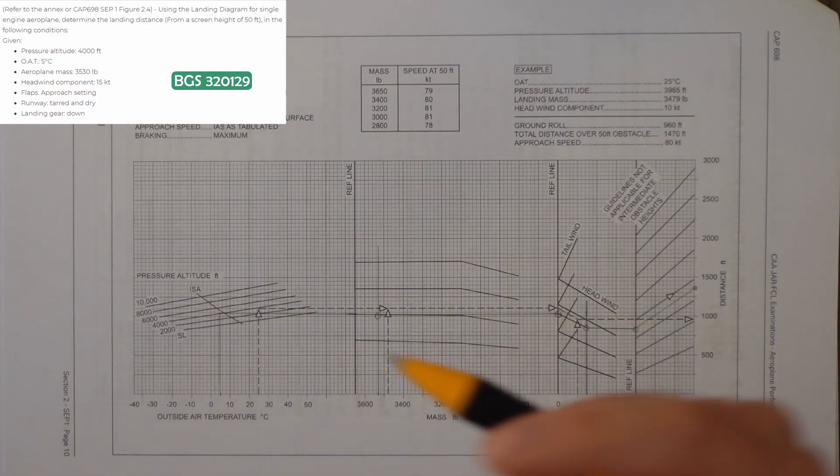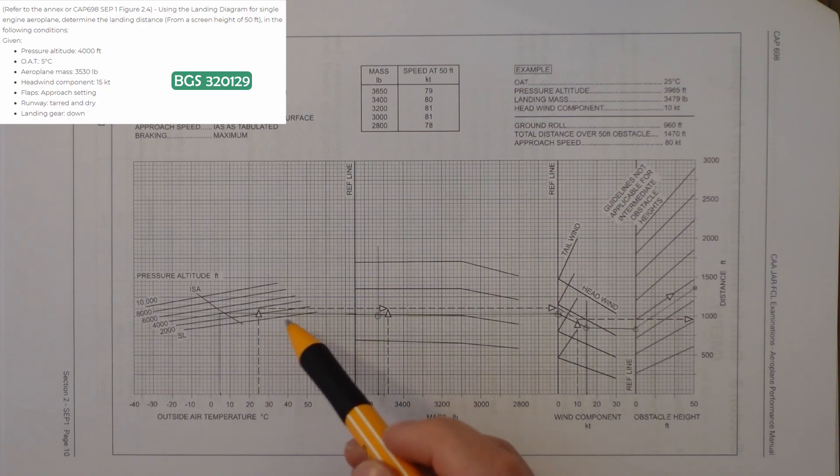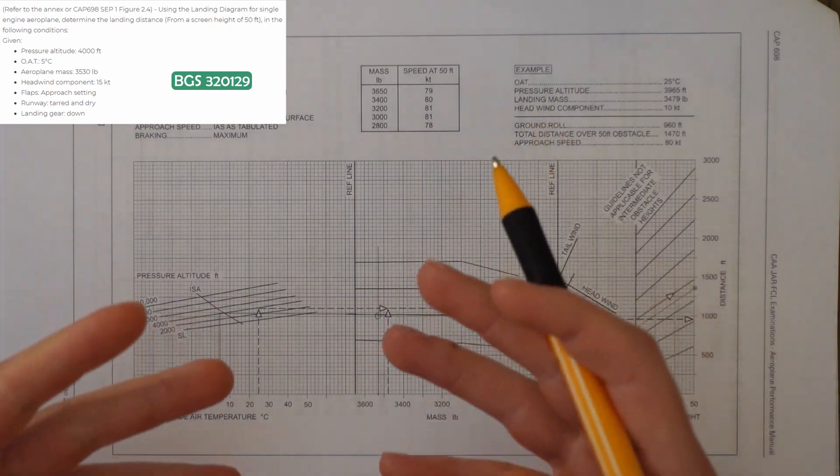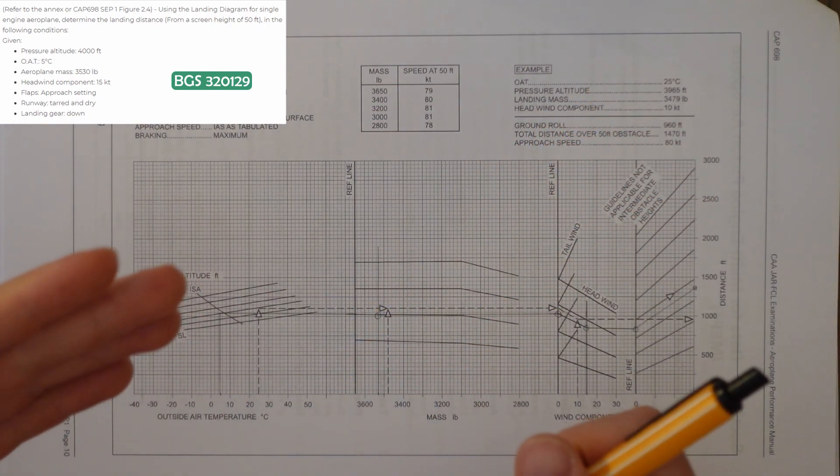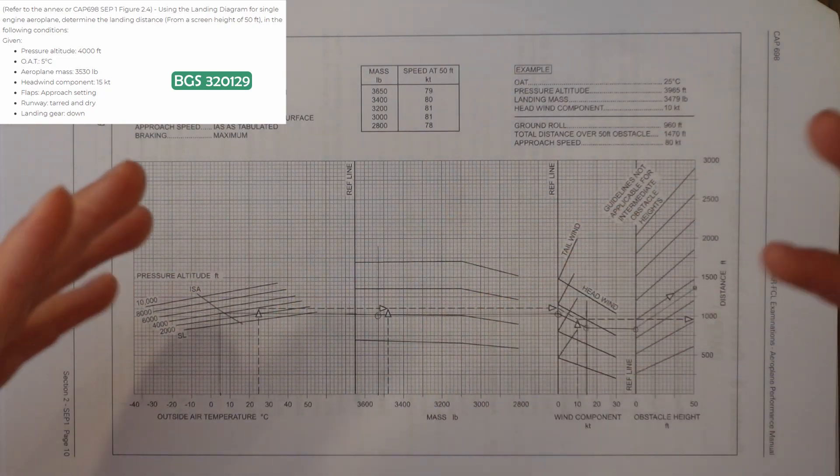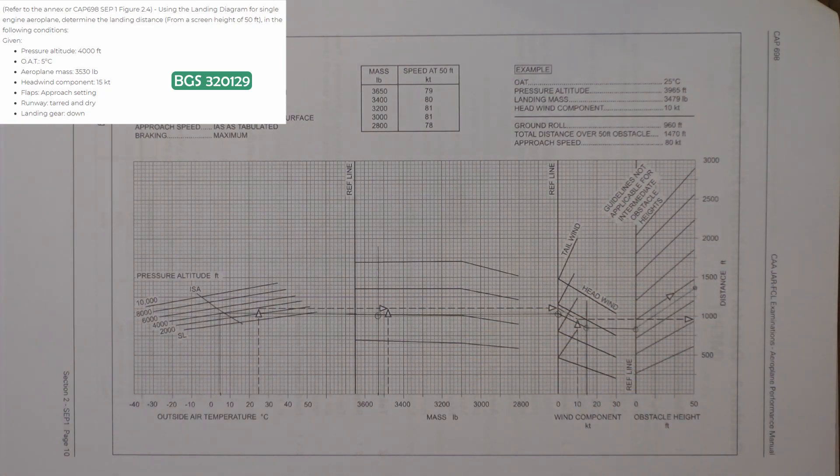The first thing I do with these sort of things is I look at the example question. I look at these dotted lines on the graph and look at how I'm supposed to draw the lines on. At what line do I go straight across, at what line do I follow it down, things like that. Just get familiar, look at the example in the top right and compare it to the dotted lines that are on there.